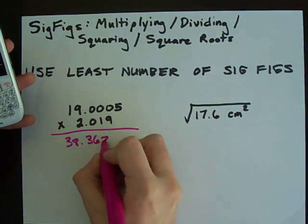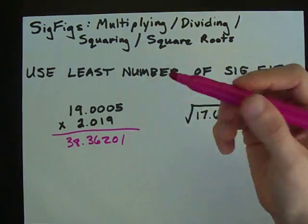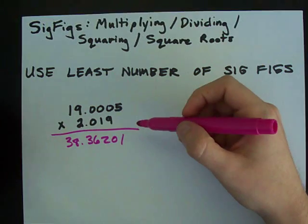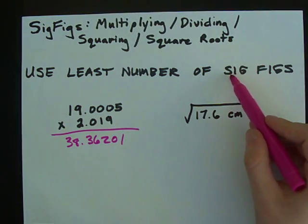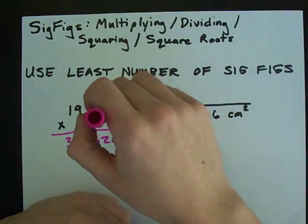Point 3620, like I got here. But that's not your final answer because you need to truncate it so it has the least number of significant figures of any of the numbers you did.